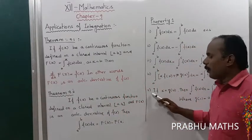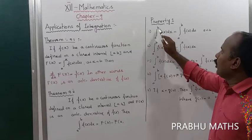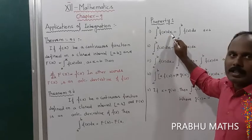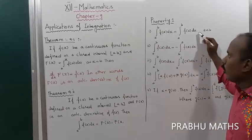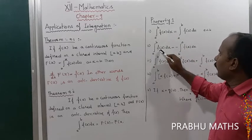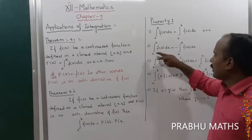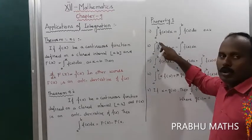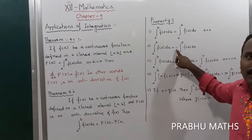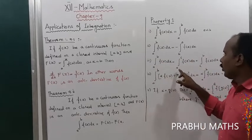There are five important properties. Property one: the integral from a to b of f of x dx equals the integral from a to b of f of u du — the variable name can be changed from x to u. Property two: the integral from a to b of f of x dx equals minus the integral from b to a of f of x dx. When you change the limits — upper limit goes to lower and lower goes to upper — the integral value becomes negative.